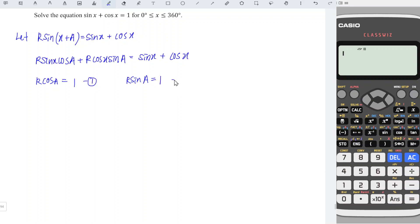So we obtain equation 1 and equation 2. If we take square of equation 1 plus square of equation 2, we obtain R² cos²a + R² sin²a = 1² + 1². Factorize R²: cos²a + sin²a = 2. By the trigonometric identity cos²a + sin²a = 1, so R² = 2, which means R = √2.